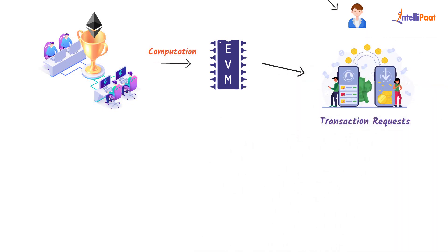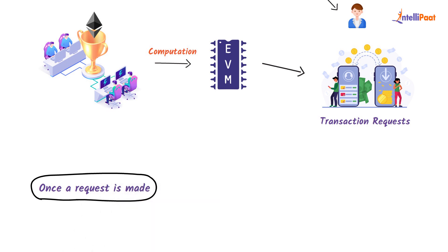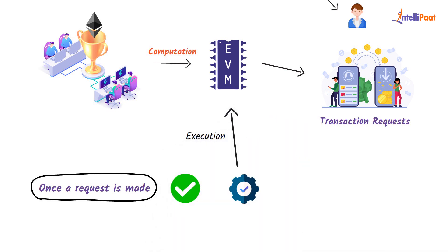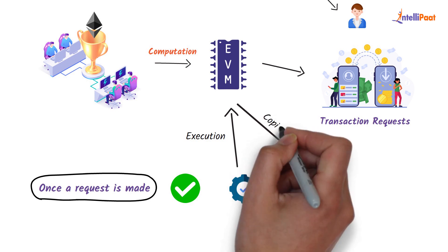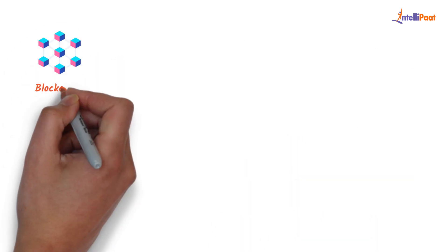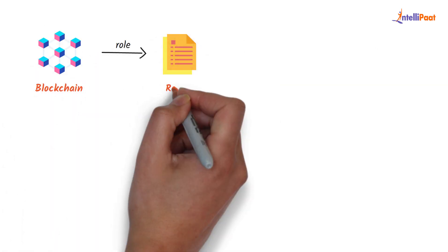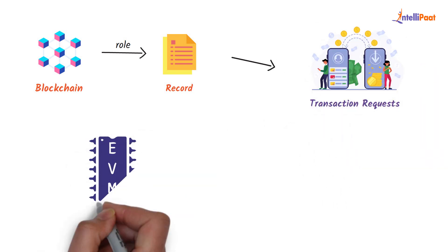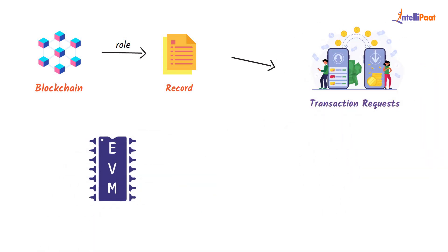Once a request is made, it needs to get verified from all the participants in order to get executed, as this execution affects EVM's state and all its copies throughout the network. Blockchain plays a role in keeping a record of all the transaction requests as well as the present state of EVM, which is again stored and verified by all nodes.